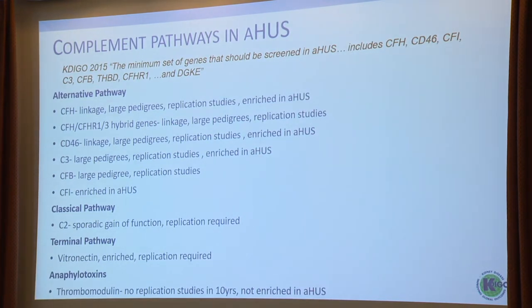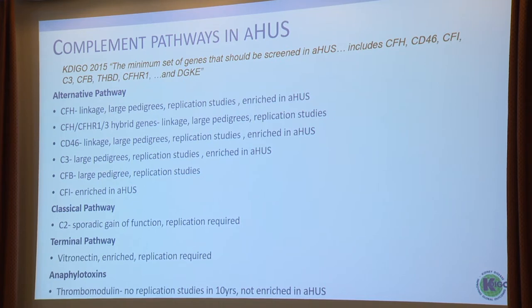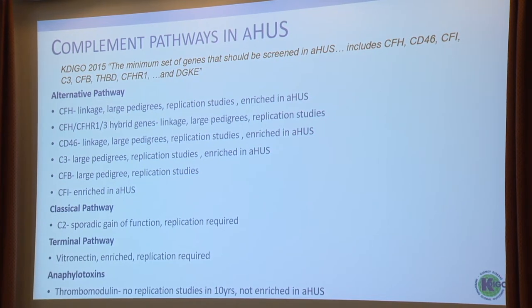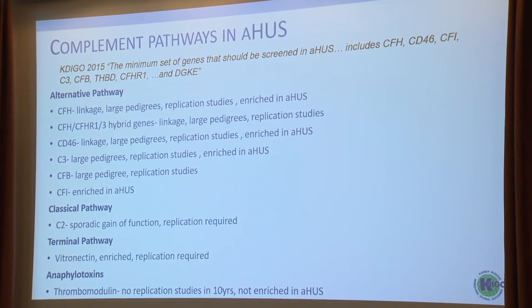What's the evidence for this? For Factor H, Factor H hybrids, and CD46, we have linkage analysis, large pedigrees, replication studies, and they're enriched. For C3, again we've got large pedigrees, replication studies, and it's enriched. Factor B is pretty rare, but we've got large pedigrees and replication studies.